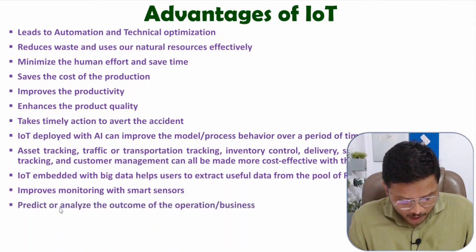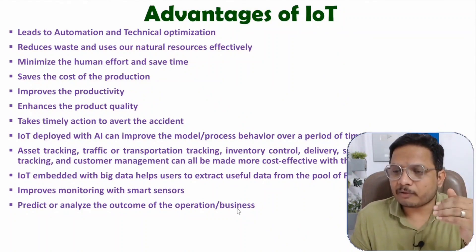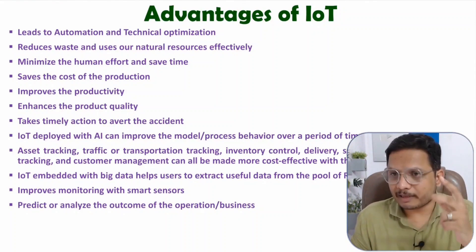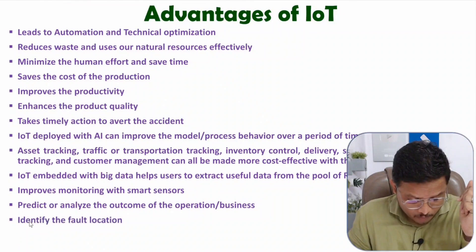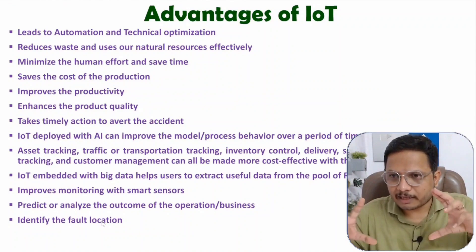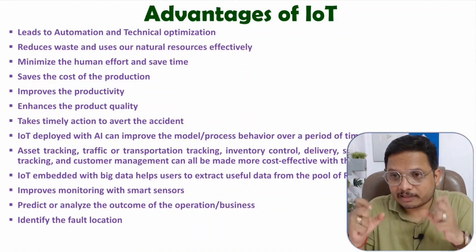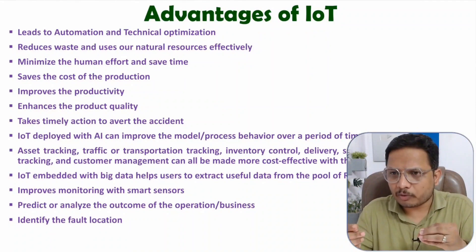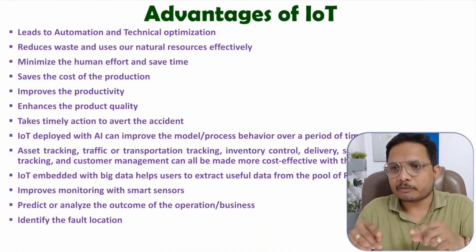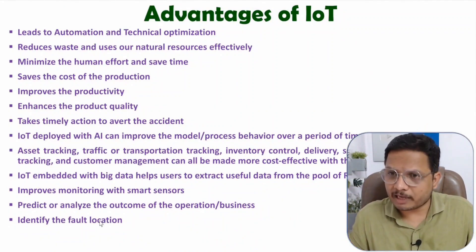We can predict and analyze the outcomes of operations and applications. By using deep learning, we can make predictions and analyze the outcomes of applications. If you can predict and analyze your outcomes, it will help your business. IoT is also used for identifying fault locations — we can see whether any faults are present and then identify them. Because everything is structured and all the data is available on the cloud, tracking elements in IoT is quite easy. In manual control, humans have to observe everything to make informed decisions, but if you have all the data available, identifying fault locations becomes easier.